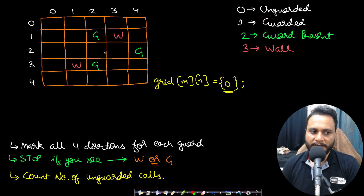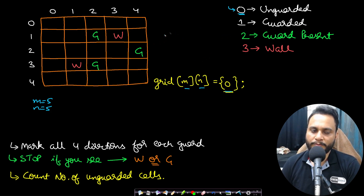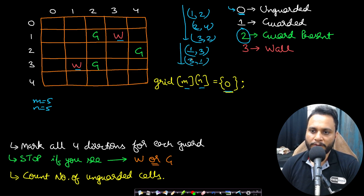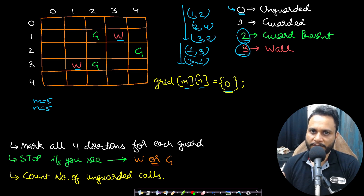Let's say M=5 and N=5. I create a grid of size M by N with all values initialized to 0, meaning all cells are unguarded. Then I iterate through all guards — for example at (1,2), (2,4), and (3,2) — and mark those grid positions with value 2, indicating a guard is present. I also iterate through all wall coordinates, such as (1,3) and (3,1), and mark those positions with value 3. Guards and walls need different values because guards can both see and obstruct, while walls only obstruct.